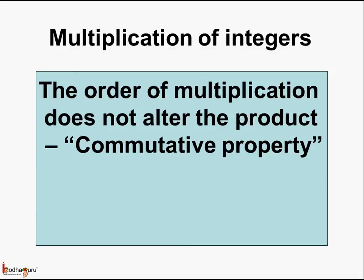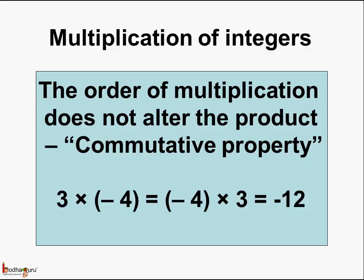Next, we learnt about the commutative property, which says the order of multiplication does not alter the product. Hence, 3 multiplied by minus 4 was the same as minus 4 multiplied by 3.